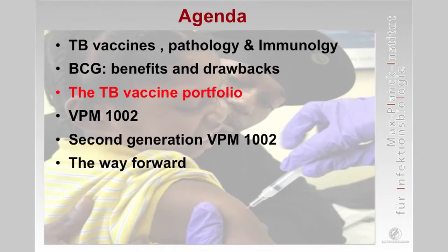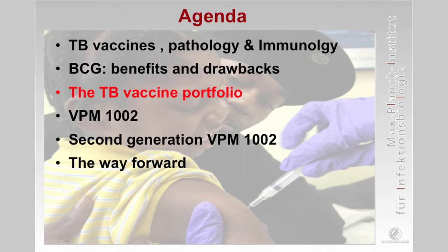All future vaccines somehow integrate BCG into their concept. The subunit vaccines, viral vector vaccines, or protein-adjuvant combinations are based on a prime with BCG — they are generally booster vaccines. The recombinant BCG vaccines, of course, have the backbone of BCG and transform it.